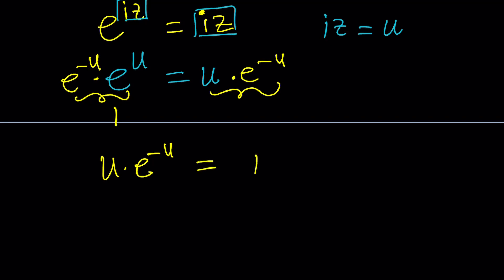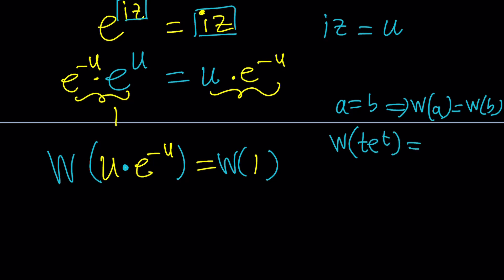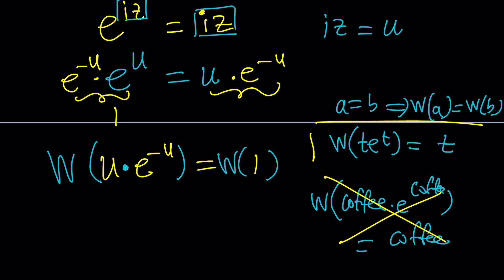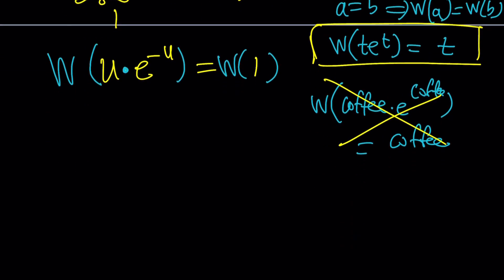In other words, Lambert's W function. So what does Lambert's W function do? First of all, if a equals b, then of course, W of a is going to equal W of b. This is always true for any function that's well defined. Now, Lambert's W function basically takes an input like t·e to the t, and it just returns t. If you don't like t and you want to use coffee, that's fine too. Lambert's W takes coffee times e to the coffee, and it just turns it into coffee. But coffee takes up too much space, so we don't want to use it. I like the t better, but it's your call.